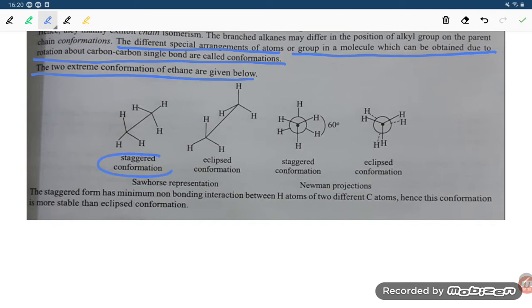So first one is staggered conformation. If you talk about the staggered conformation where the hydrogens are far away from each other and eclipsed conformation they are coming close.